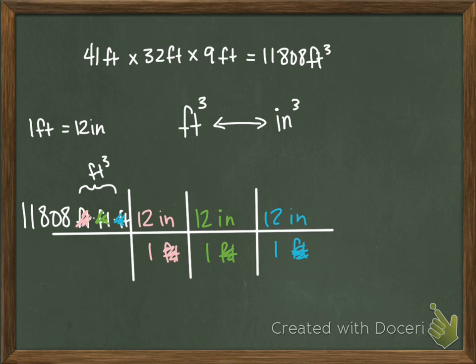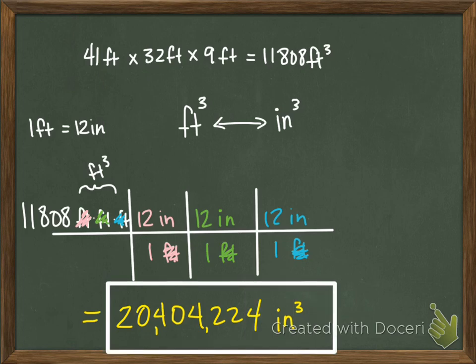Then all we have to do is multiply it out. We're going to get a really big number so we're going to go 11,808 times 12 times 12 times 12. We get 20,404,224—that's like 20 million, 404 thousand, 224 inches cubed. It's a really big number but that's okay, it is what it is. So our volume of the classroom would be 20 million something inches cubed. When we're converting these things, just make sure you take care of all of the exponents and not just one.